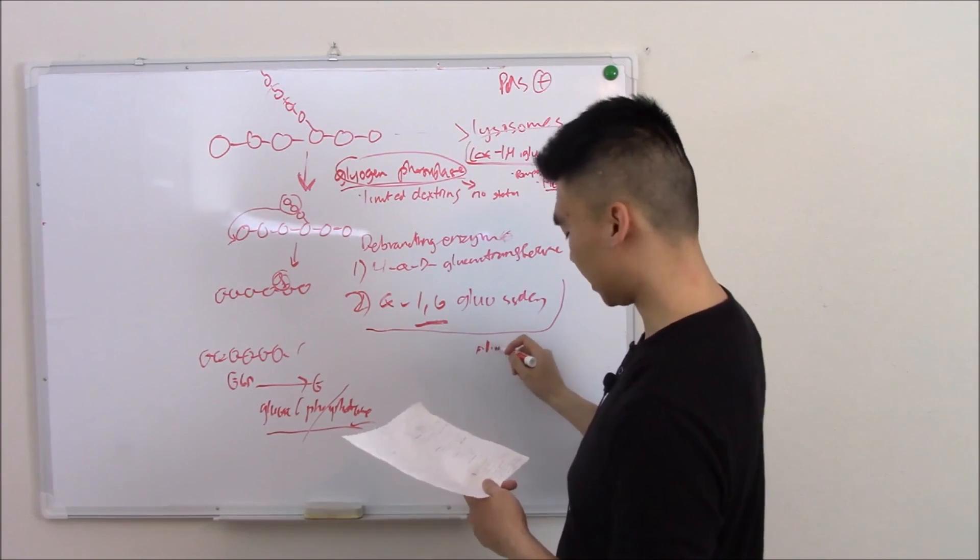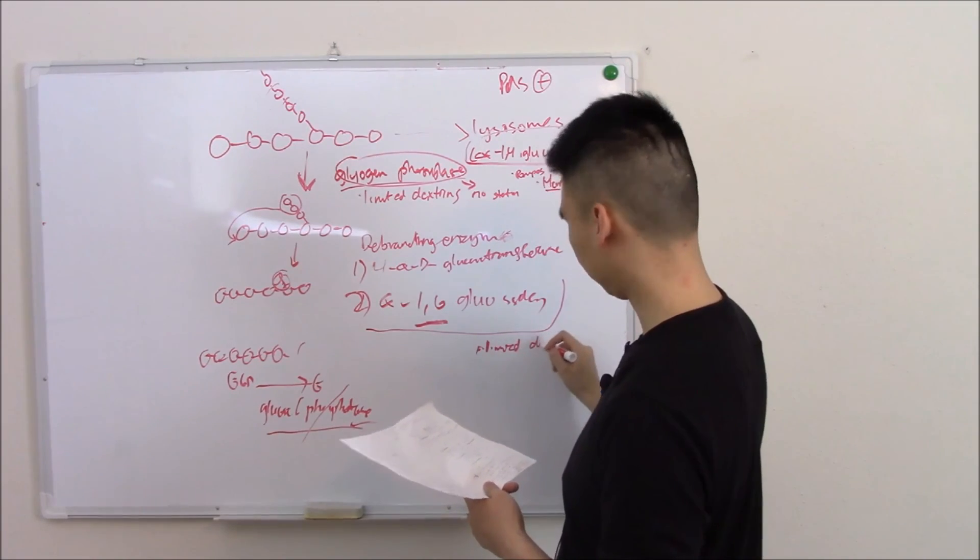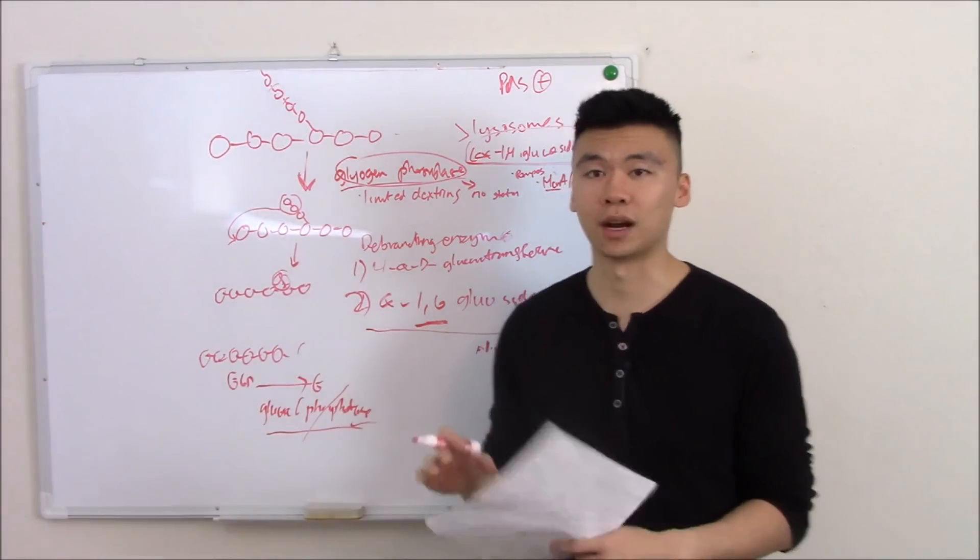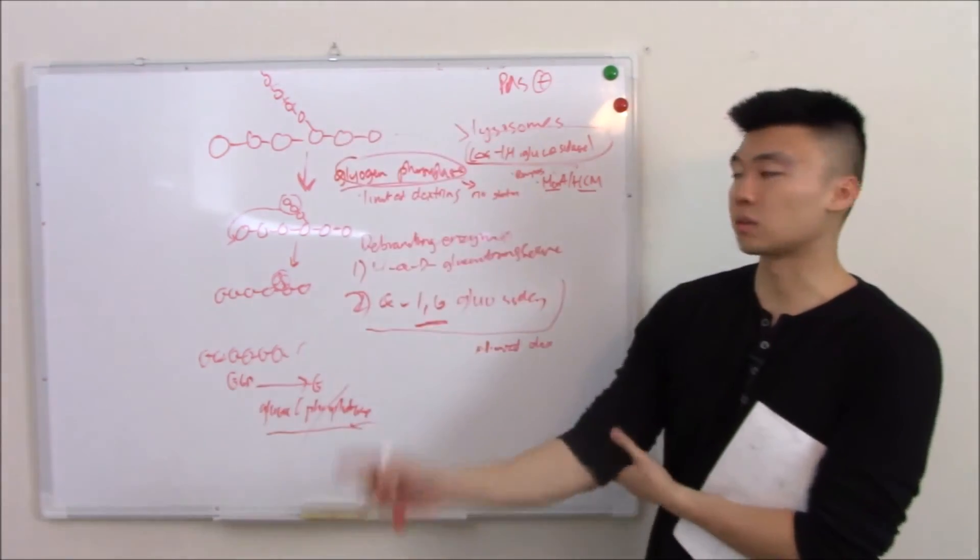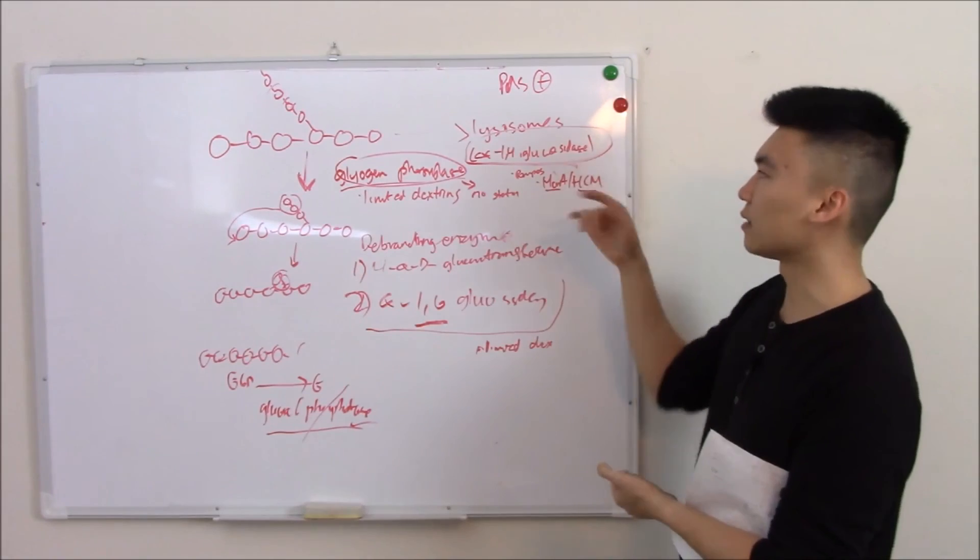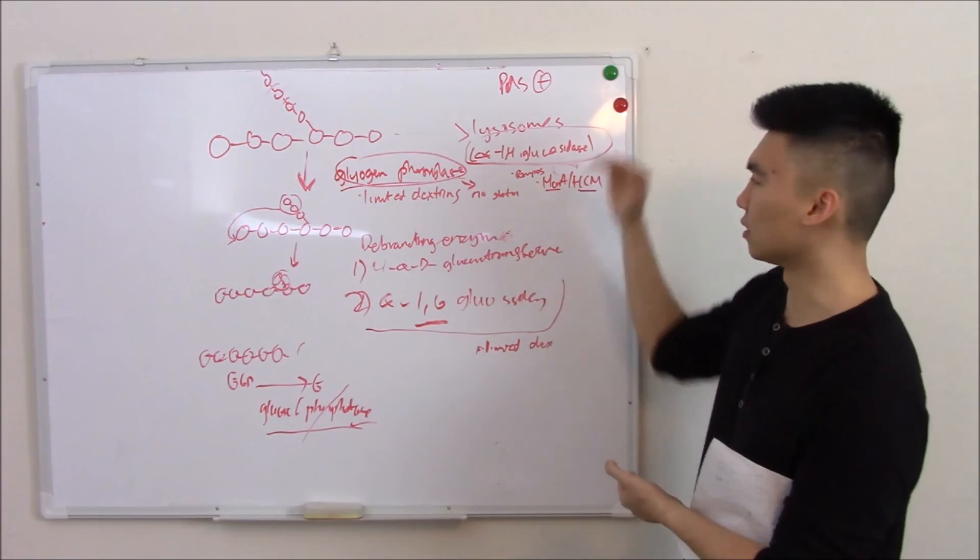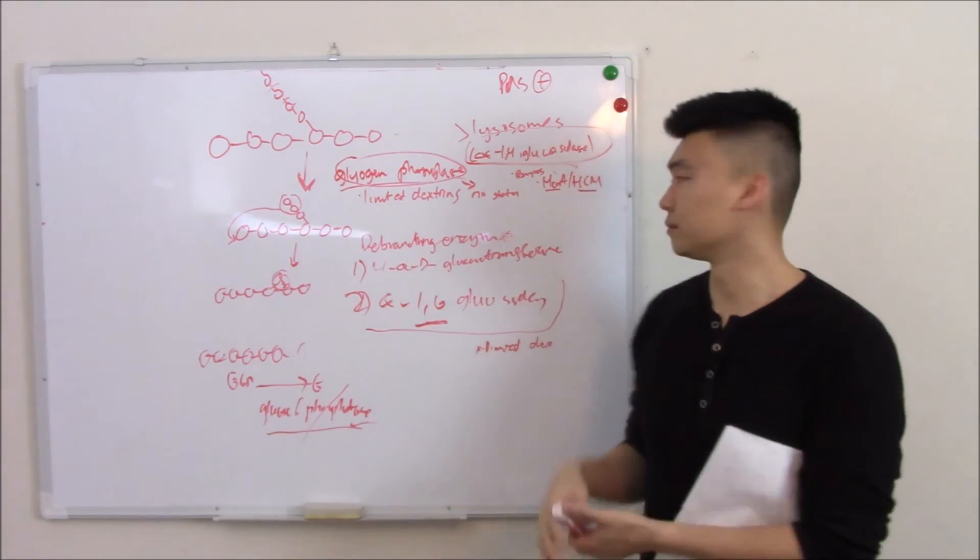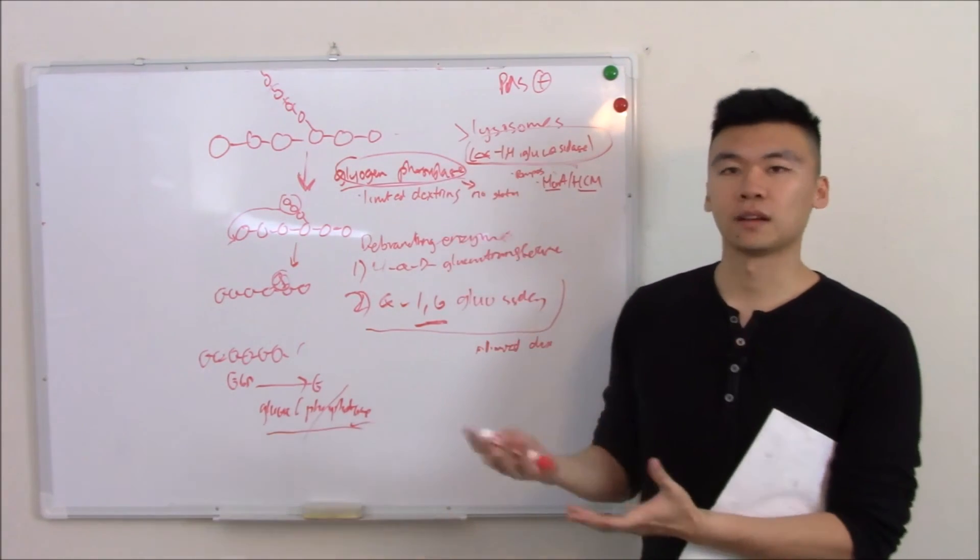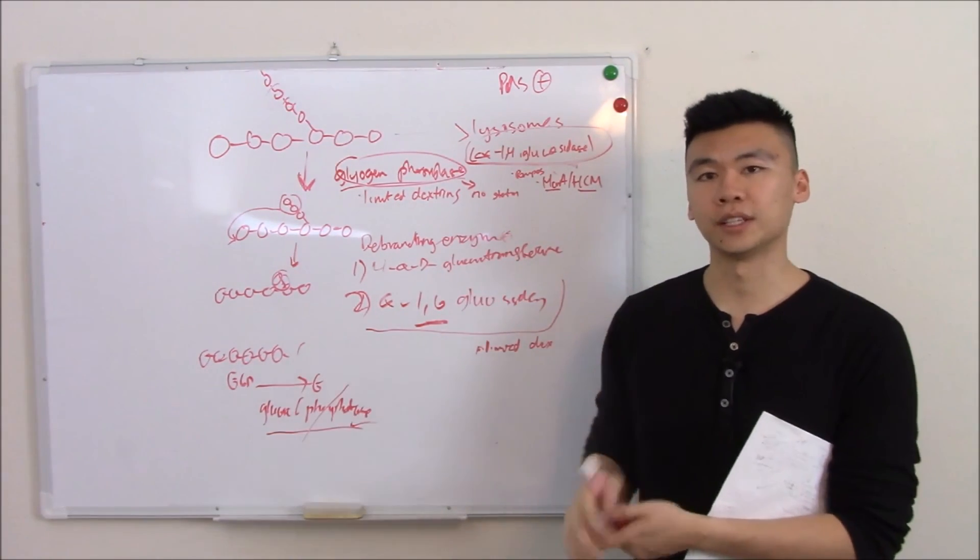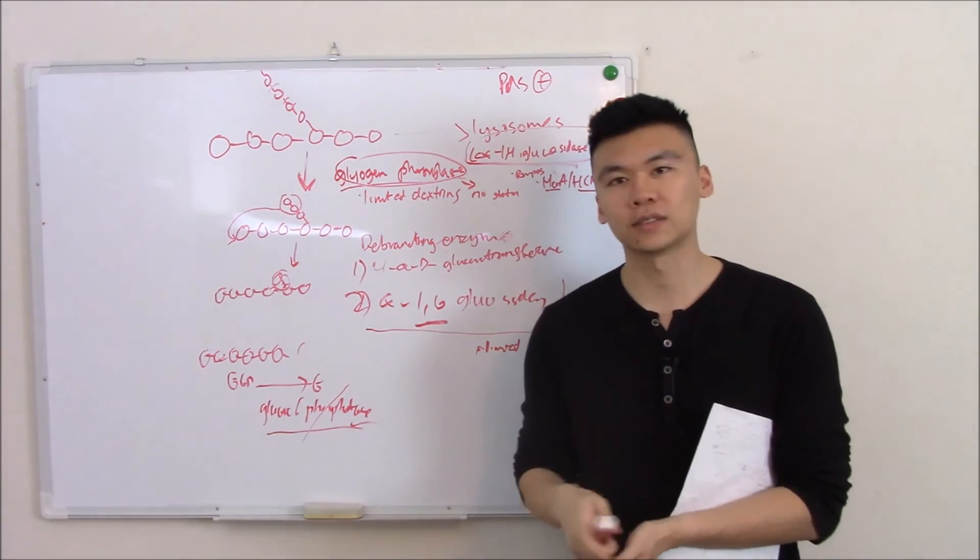That does it. Those are your glycogen storage diseases. Know the steps from glycogen to glucose, and then from that just go down the list of what can go wrong. Pompe's, McArdle's, Cori's - just know a few facts and you should be good to go. That does it for this video. See you next time.